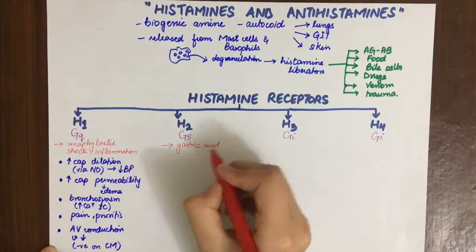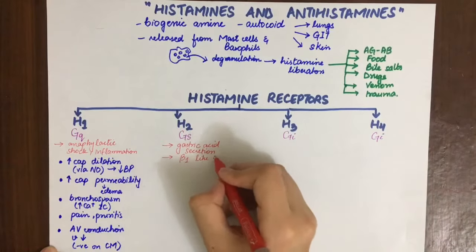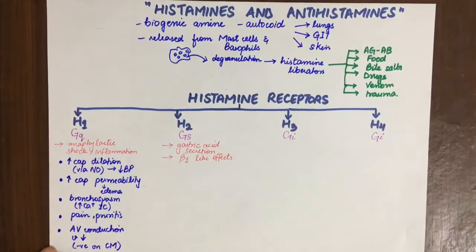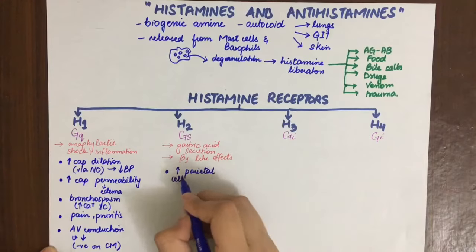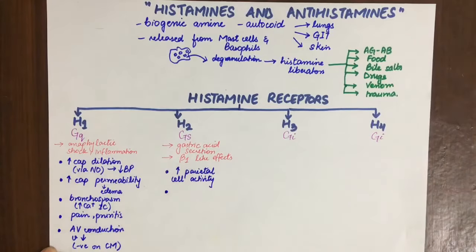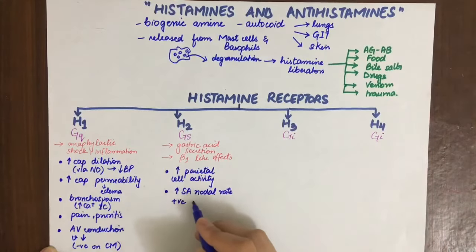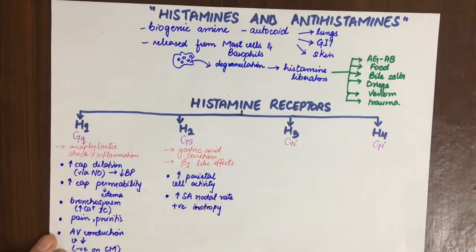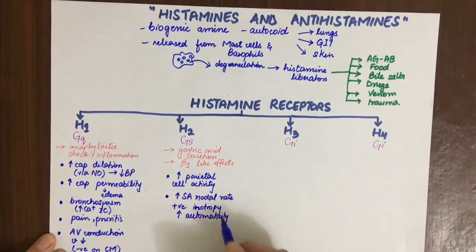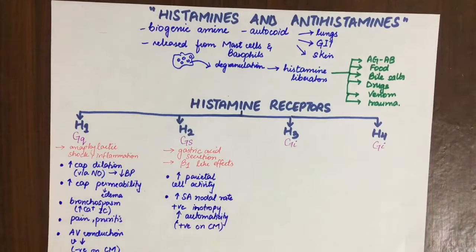H2 is mainly involved in gastric acid secretion — it is present on parietal cells in the stomach. It also has beta-1-like actions: it increases parietal cell gastric acid secretion and thus promotes ulcers. It also increases SA nodal rate, causes positive inotropy, and increases automaticity.